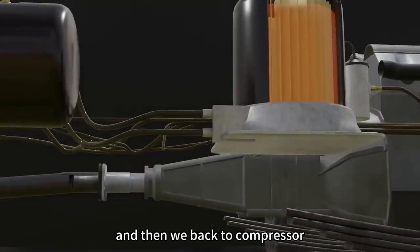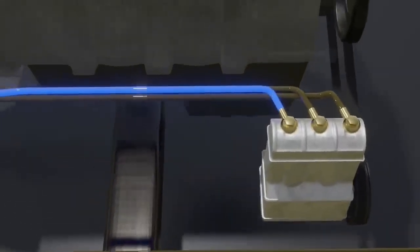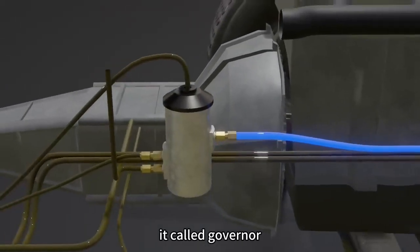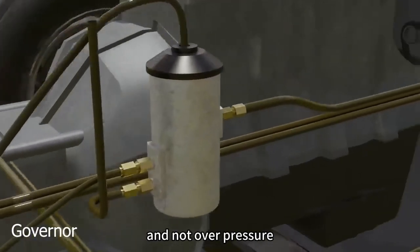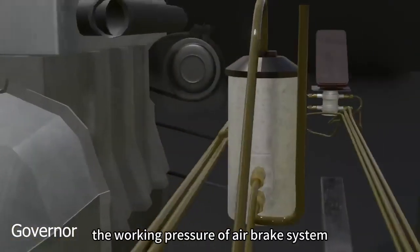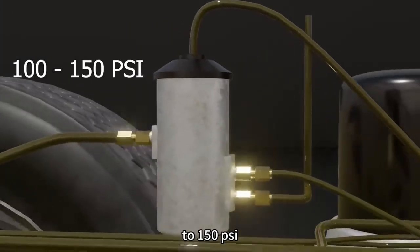Then we go back to compressor. The inlet hose has a connection to the valve mechanism. It's called governor. It functions to keep the pressure at working pressure and not over pressure. The working pressure of air brake system is approximately 100 to 150 psi.